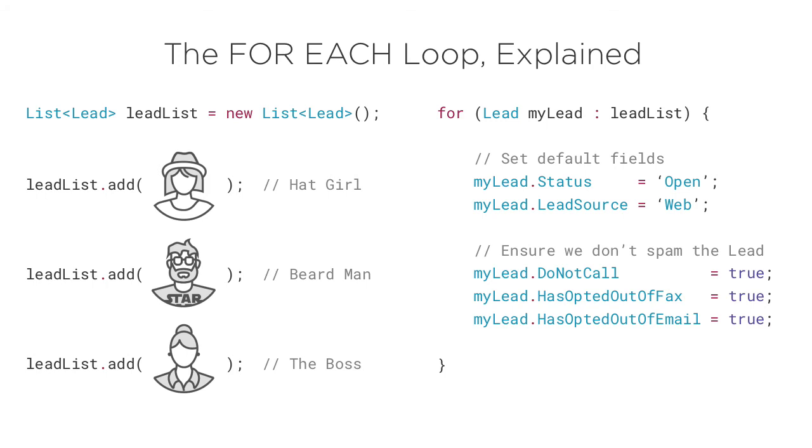Now, let's walk through how our for each loop evaluates. First up is hat girl. Remember, that lists preserve the order of records inside it. Since we added hat girl first, she's the first up in our loop.